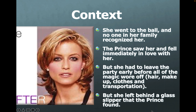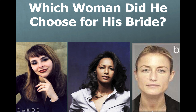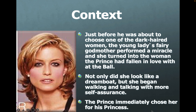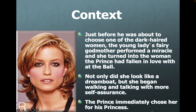Now you may recognize this story, but it has a different ending. The prince went around the land looking for someone to fit the slipper. He found three women who had the same size foot, but he didn't recognize any of them as the woman he danced with at the ball. When he found the young lady in her house, she cowered and seemed meek — certainly not the self-assured woman from the ball. Just before he was about to choose one of the other women, the young lady's fairy godmother performed a miracle, and she turned into the woman the prince had fallen in love with at the ball. Not only did she look like a dreamboat, but she began walking and talking with more self-assurance. The prince immediately chose her for his princess.